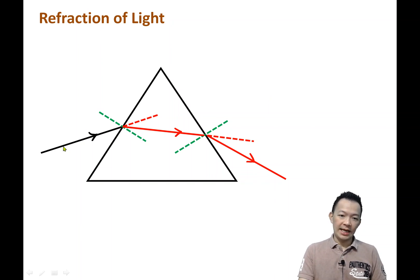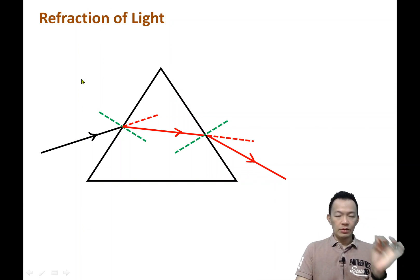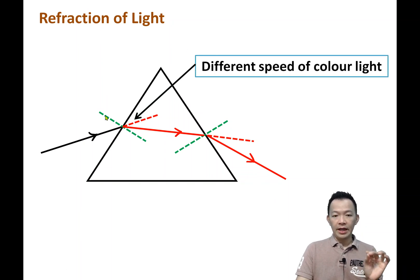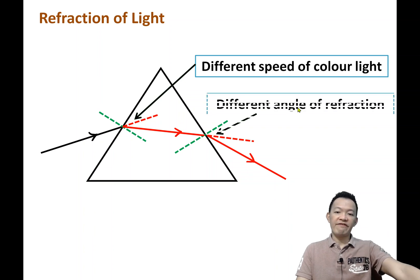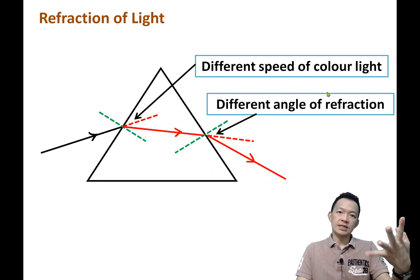This is white light, it contains seven colors. When the seven colors pass through the prism from the air, the speed of the light will be changed. Different color light has different speed, and when the speed becomes different, they will be deflected into different angles. Finally, all the seven color lights will be separated.